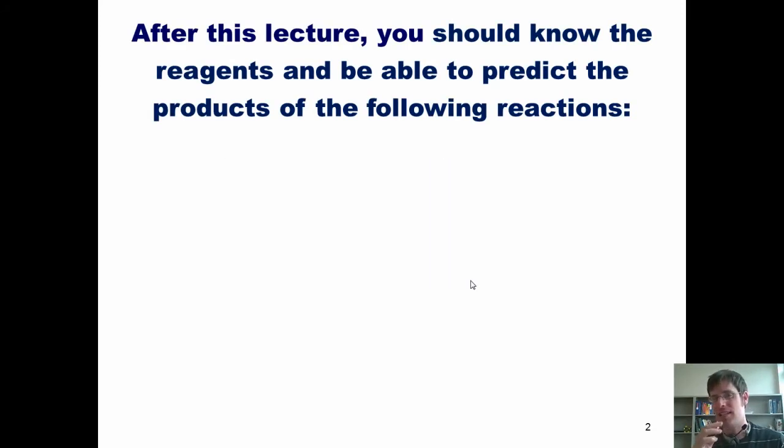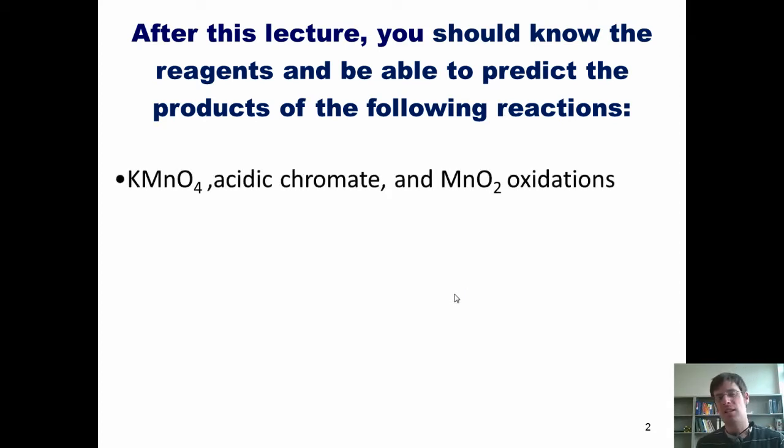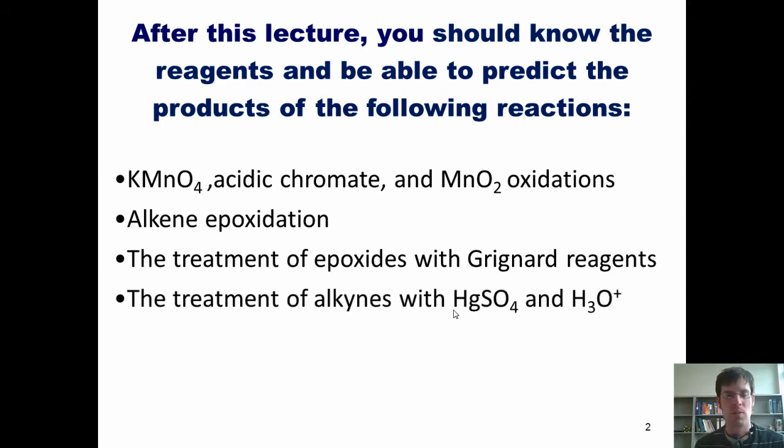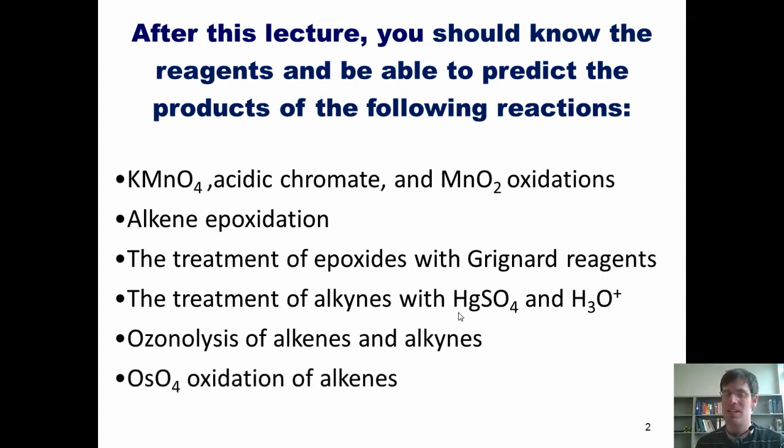After today's lecture, you should know the reagents and be able to predict the products of the following reactions: potassium permanganate, acidic chromate, and MnO2 oxidations, alkyne epoxidation, the treatment of epoxides with Grignard reagents, the treatment of alkynes with mercury sulfate and aqueous acid, ozonolysis of alkenes and alkynes, and osmium tetroxide oxidation of alkenes.